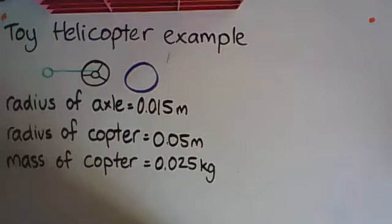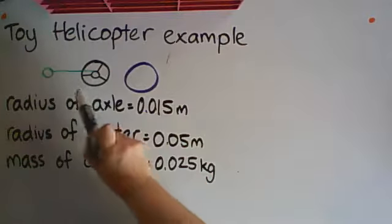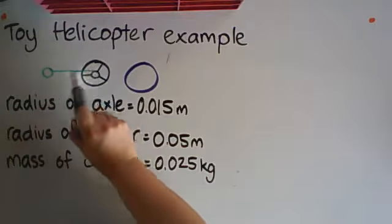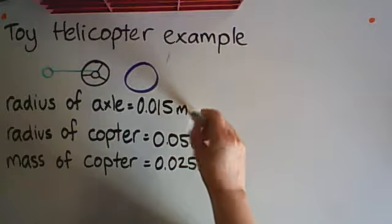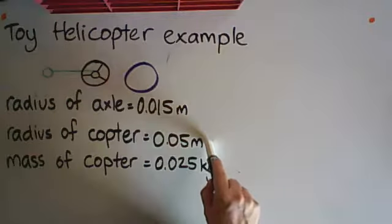We've got the radius of the axle, where the string is attached to it—radius of our axle there, 0.015 meters. The helicopter itself is only 5 centimeters in diameter, and we know it's only 25 grams.